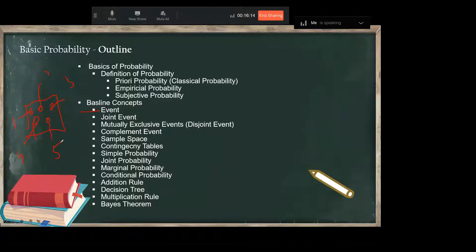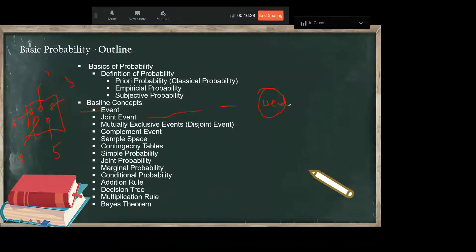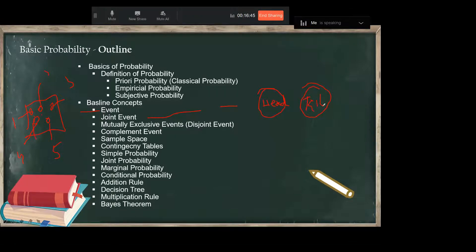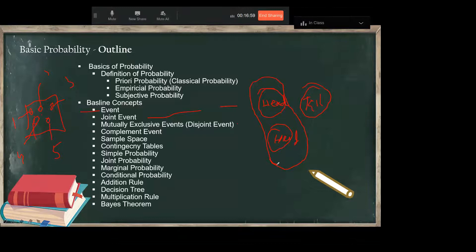If we are interested in that, there is a concept of a joint event, which means an outcome having two characteristics. For example, a coin has a head and a tail — there is a possibility of two outcomes from a single event. If you flip a coin twice and you get heads twice, getting two heads is a joint event.